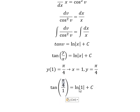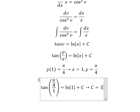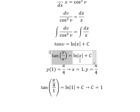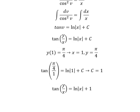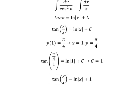This gives us tan of π/4 equals ln of 1 plus C, which equals 1. Since ln of 1 equals zero, we get C equals 1. This is the end, thank you for watching.